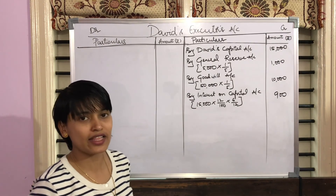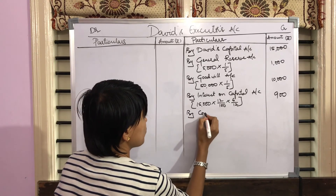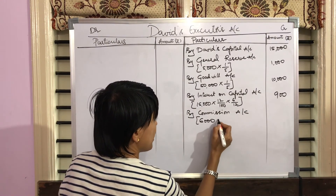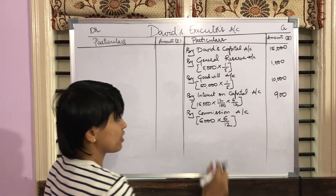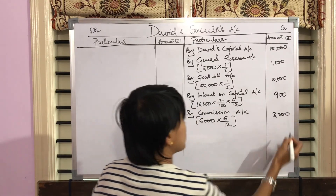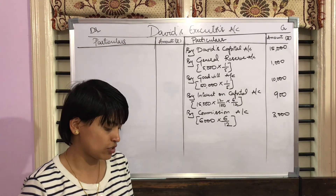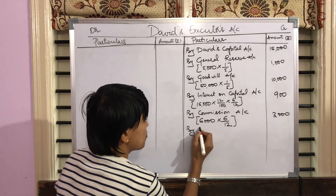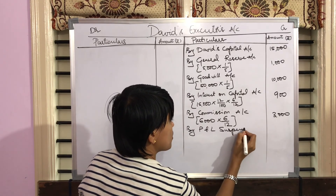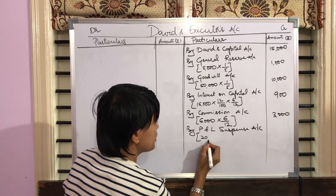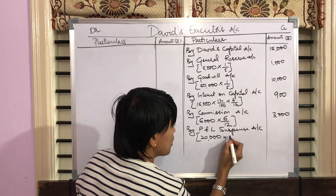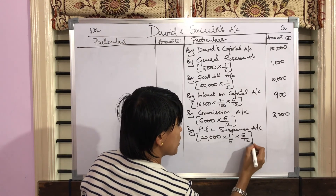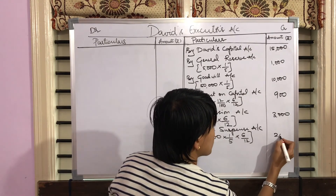Commission up to the date of death — annual commission is Rs. 6,000. Write 'By Commission Account', amount Rs. 6,000. He is entitled only up to the date of death, which is 6 divided by 12, so the amount is Rs. 3,000. The last point is the profit till the date of death based on the previous year profit — previous year profit Rs. 20,000 — written as 'Profit and Loss Suspense Account'. His share is 1 by 5 up to the date of death, which is 6 divided by 12 — the amount is Rs. 2,000.